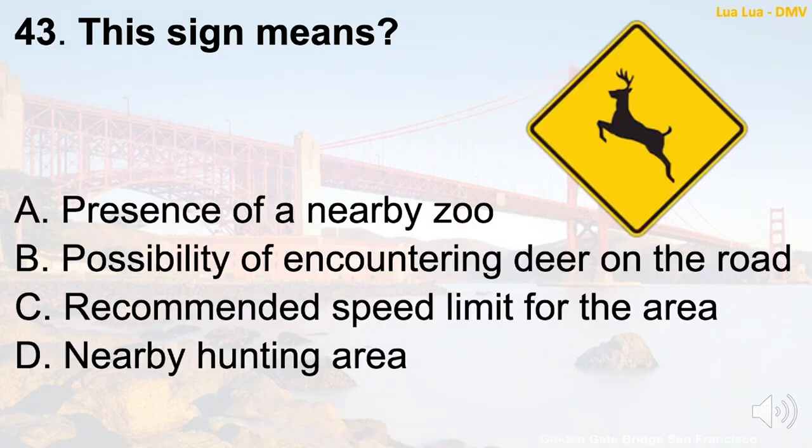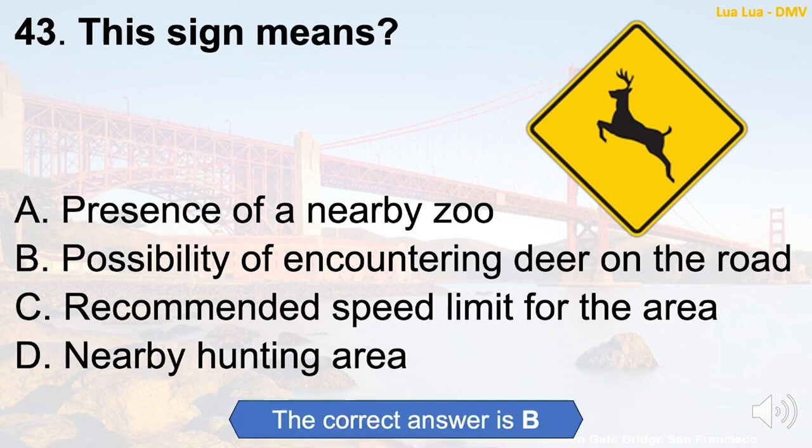Question 43: This sign means — A. Presence of a nearby zoo. B. Possibility of encountering deer on the road. C. Recommended speed limit for the area. D. Nearby hunting area. The correct answer is B: Possibility of encountering deer on the road.